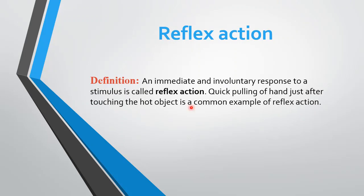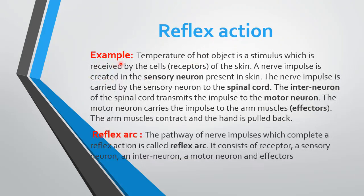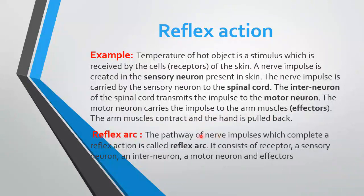جب کبھی کسی hot object کو touch کریں تو فوراً ہاتھ پیچھے کھینچ لیتے ہیں — یہ reflex action کی common example ہے۔ In detail: the temperature of the hot object is a stimulus received by the receptors of the skin. A nerve impulse is created in the sensory neuron present in the skin. The impulse is carried by the sensory neuron to the spinal cord. The interneuron of the spinal cord transmits the impulse to the motor neuron. The motor neuron carries the impulse to the arm muscles (effectors), the arm muscles contract, and the hand is pulled back.